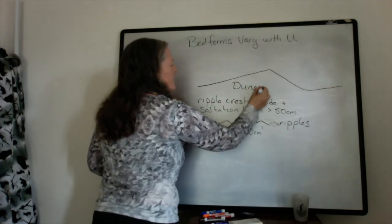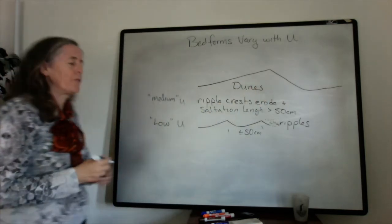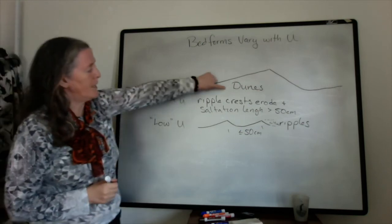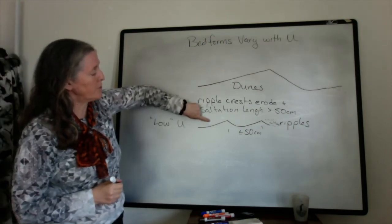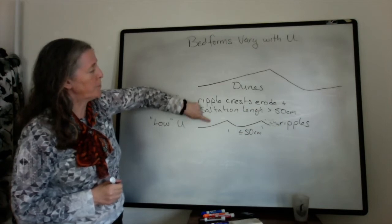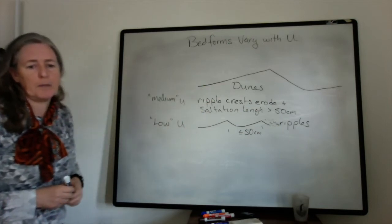So these are subaqueous dunes separate from windblown dunes. But they have a very similar geometry to ripples, but they tend to be much larger.